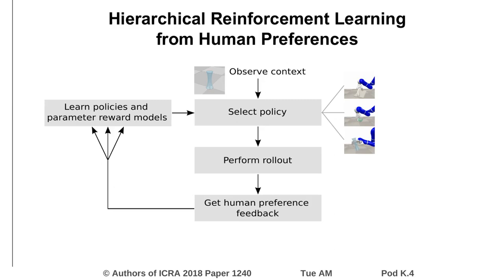A learning algorithm could look as follows. Before each rollout, a context is observed. Given the context, a policy is selected according to the predicted reward of taking each option. The policy generates motion parameters, which produce a rollout. After the rollout is performed, a human compares the current with the previous rollout. Based on this preference feedback, the policy and reward model of each option are updated.